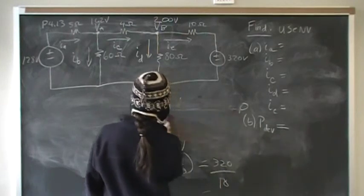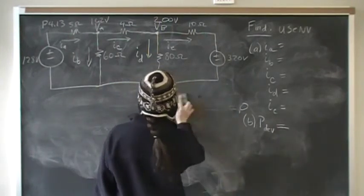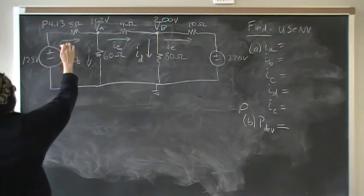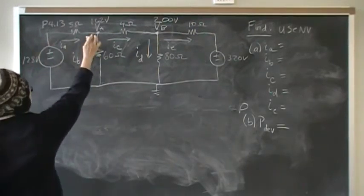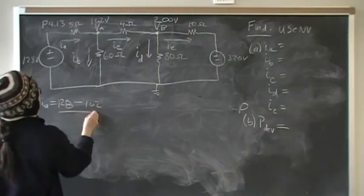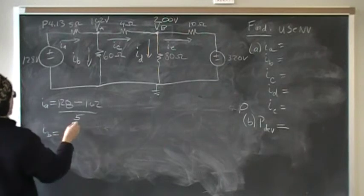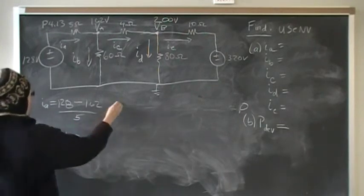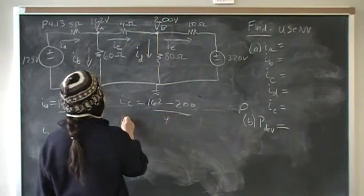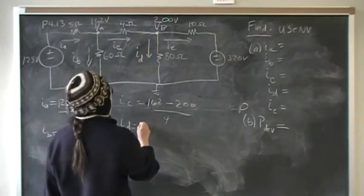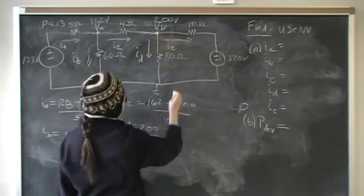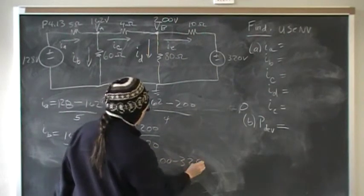You follow the passive sign convention. The direction of the current tells you which voltages to subtract. The current starts from here and goes to here. That means we're going to start with 128 and go to here. So IA is 128 minus 162 over 5. IB is 162 over 60. IC is 162 minus 200 over 4. ID, you're going to start, which is following exactly what the arrow tells you to do, 200 over 80. IE, arrows from here to here, 200 minus 320 over 10.